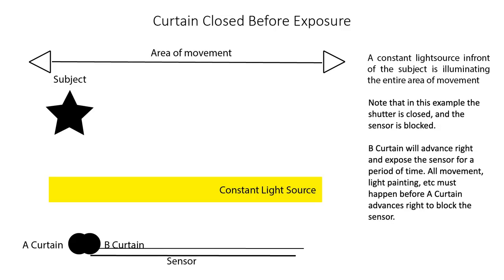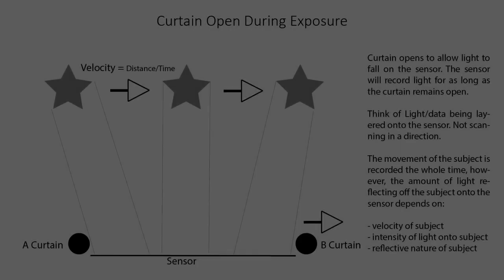If we quickly explain this — at the bottom left, you can see the curtain is enclosed in front of the sensor. When you press the shutter, the B curtain starts running to the right. When it's open, it allows light to fall onto the sensor, and then the A curtain moves right as well to close the sensor. When we're looking at what's happening during an exposure: if the star is your subject and it's moving from left to right, as soon as the curtain is all the way open, that whole movement is being recorded onto the sensor. Because it's not an instant in time but a longer period, you're going to see a blurred motion.